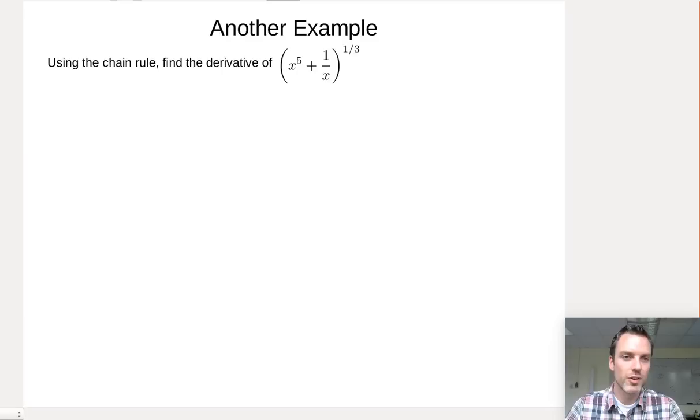Great. Let's look at one more example. Here, as we've seen, f of x is just x to the 1 3rd. G of x is x to the 5 plus 1 over x.